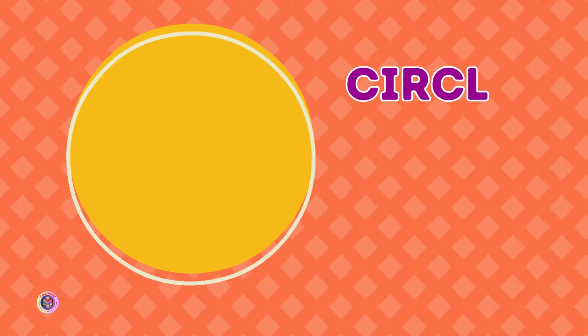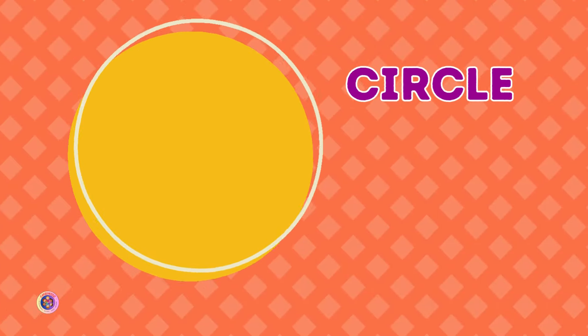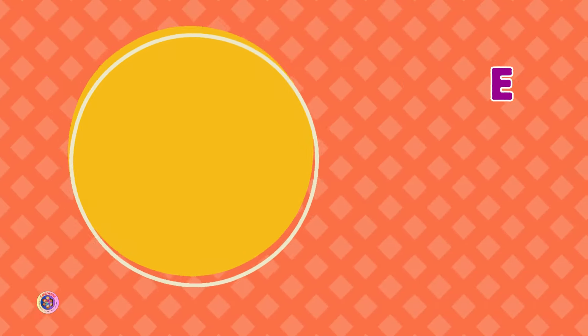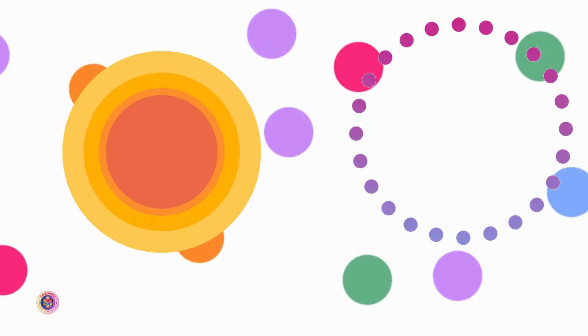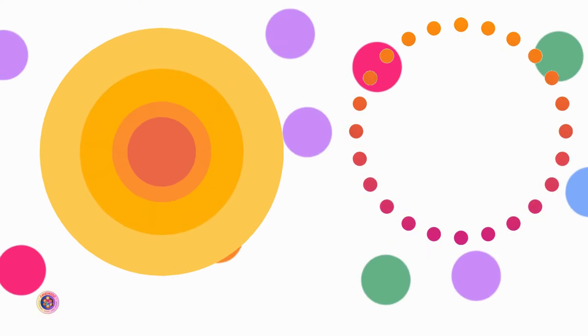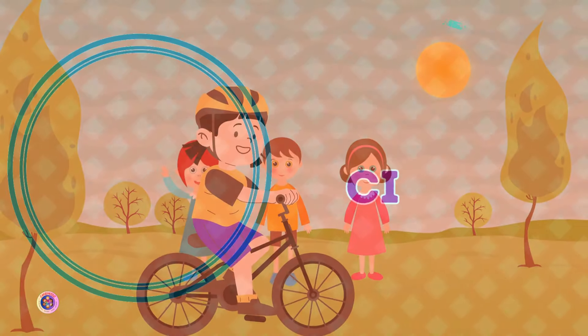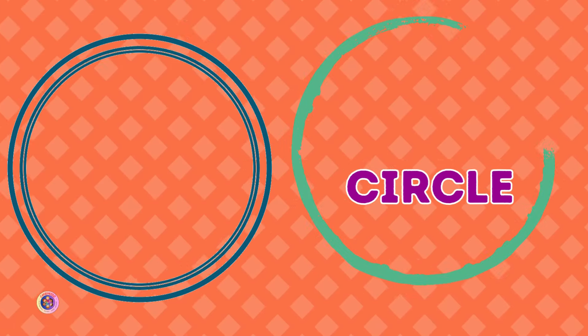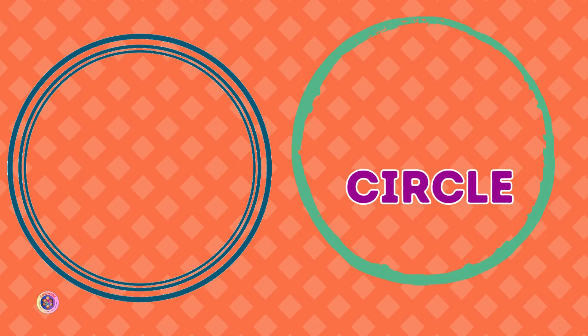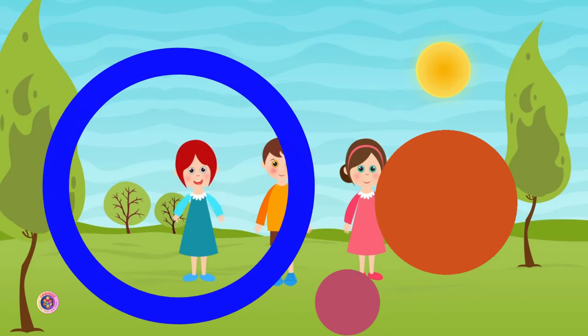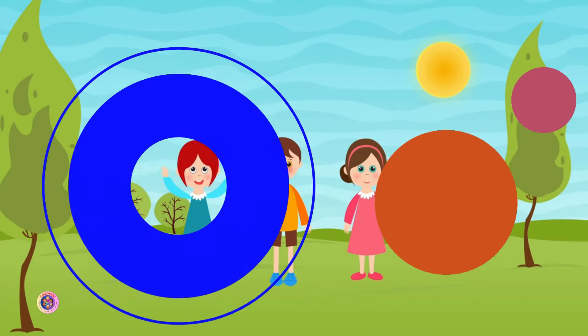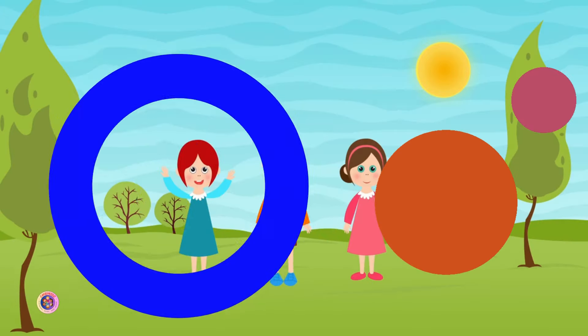There's a circle, round and round, rolling smoothly on the ground. It has no corners, it has no sides. In a loop, it always glides. Shapes,